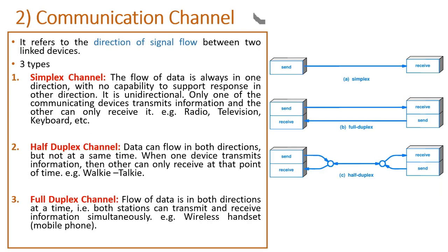Now let us understand the term communication channel. It refers to the direction of signal flow between two linked devices — one is the sender and another one is the receiver. The direction in which the information or signal is shared is called the communication channel.